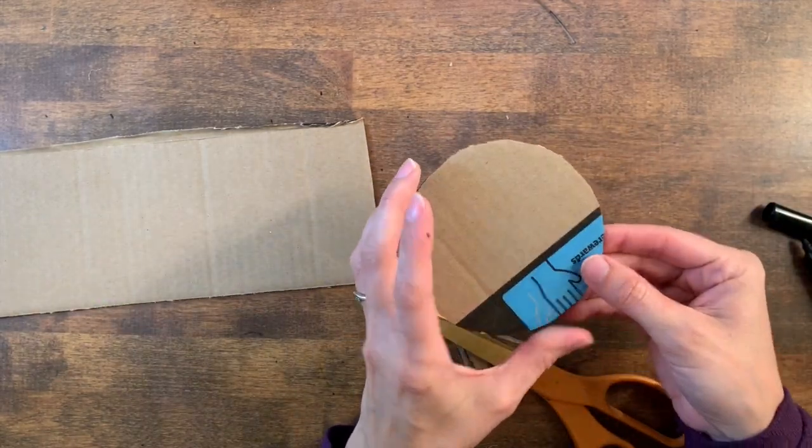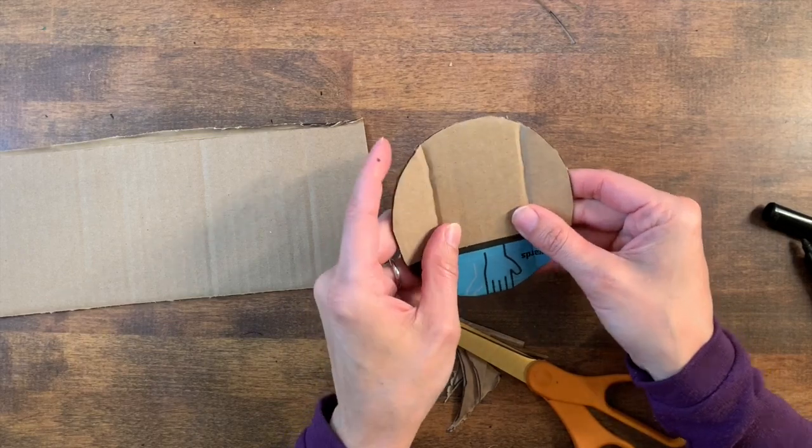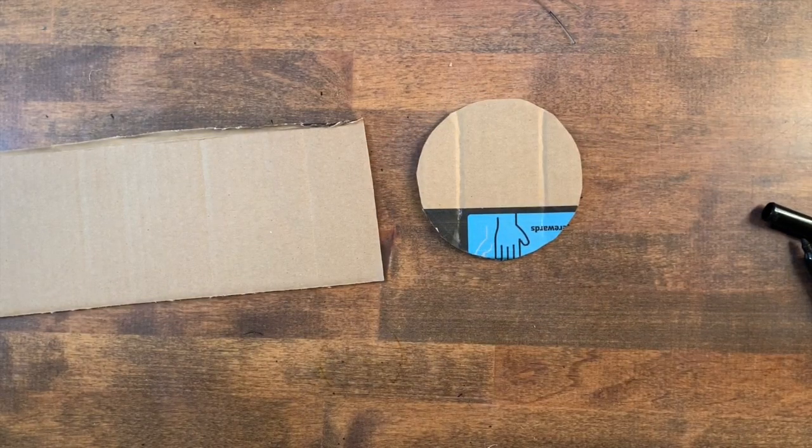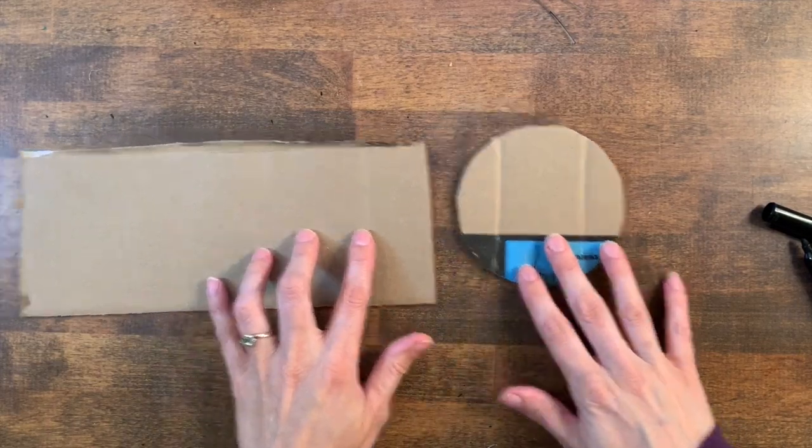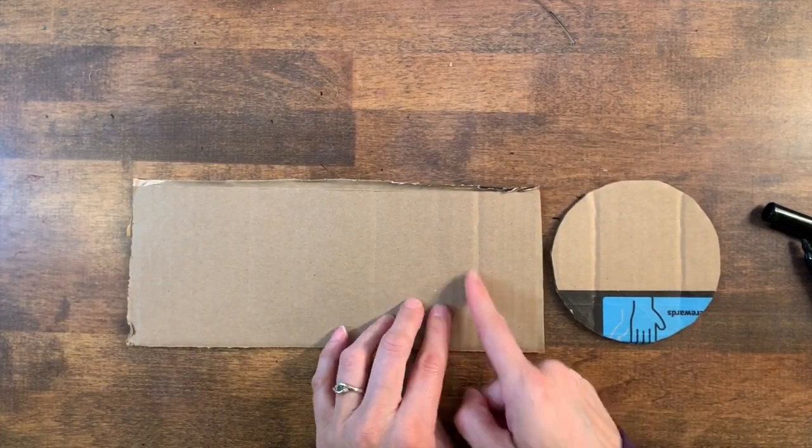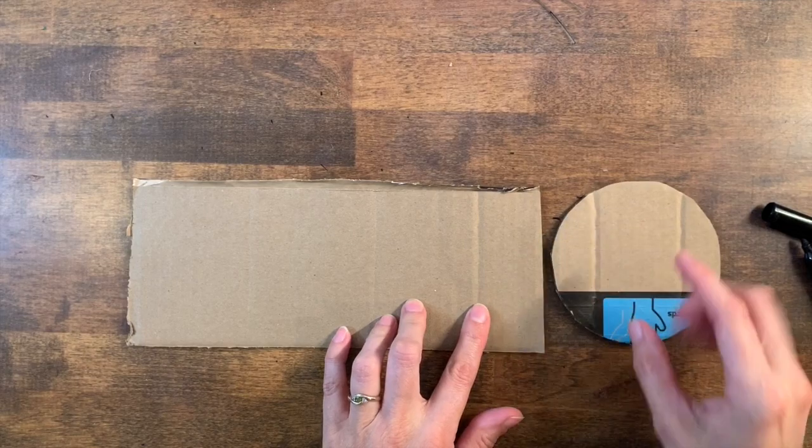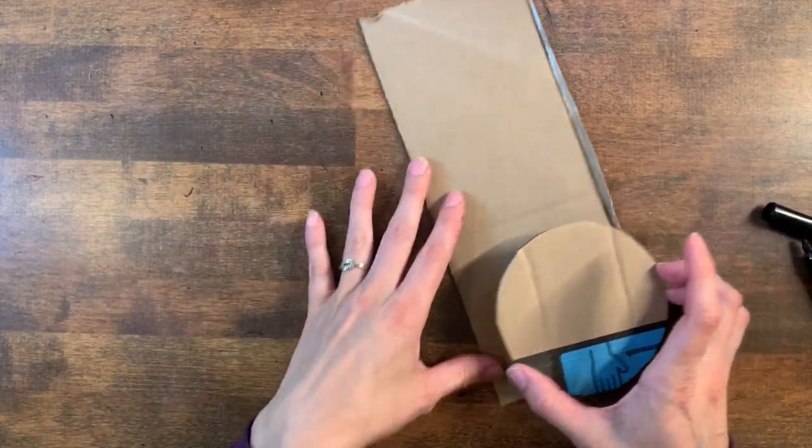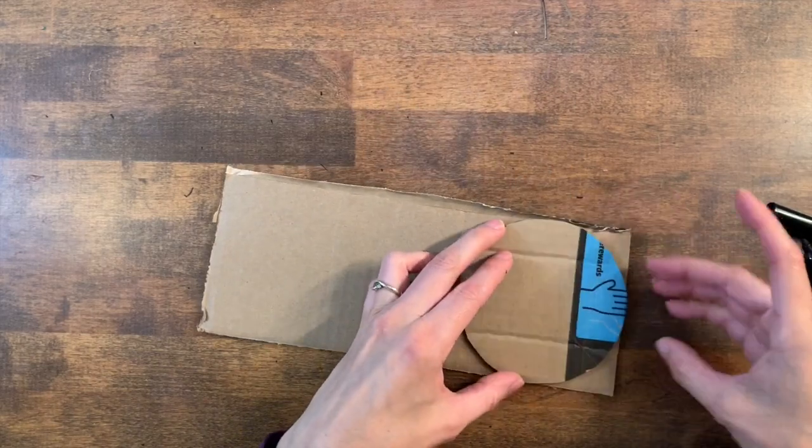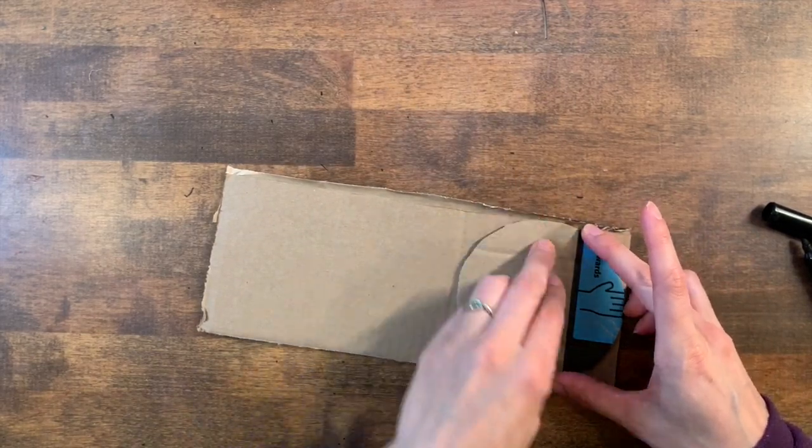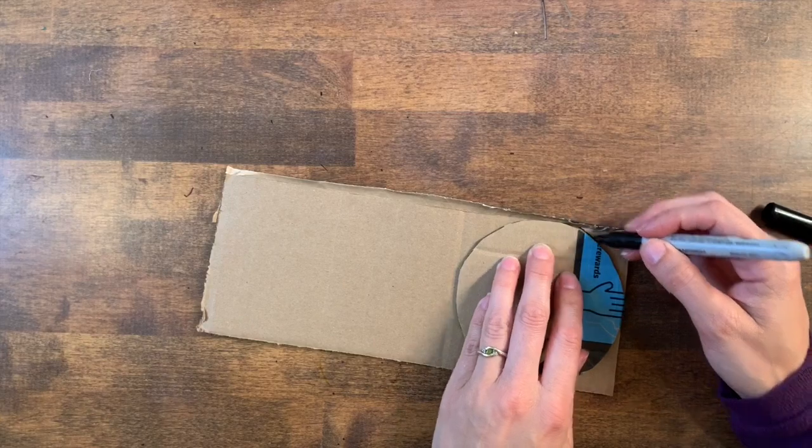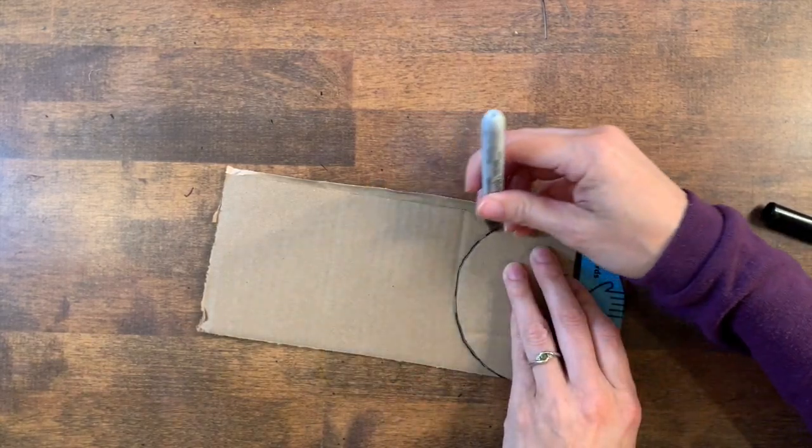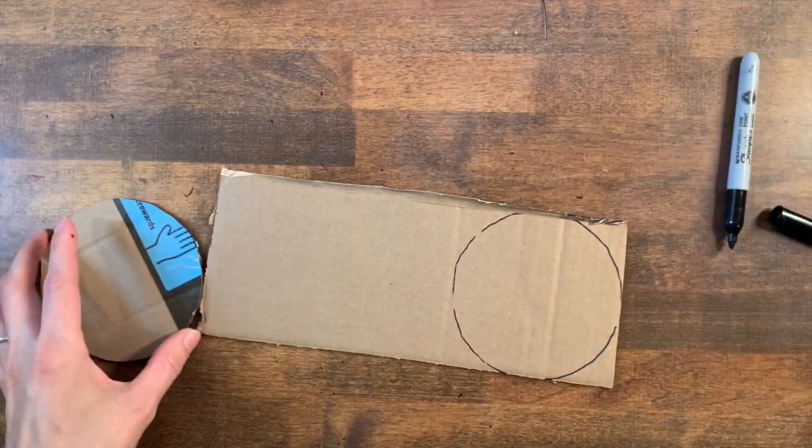Now you want to make a second layer with the lines of corrugation going the opposite direction. If I look at my two pieces of cardboard, I notice the lines are going in the same direction. So I want to rotate my cardboard so that the lines are going in the opposite direction. And I'll cut it out.